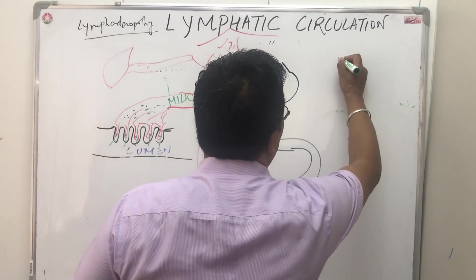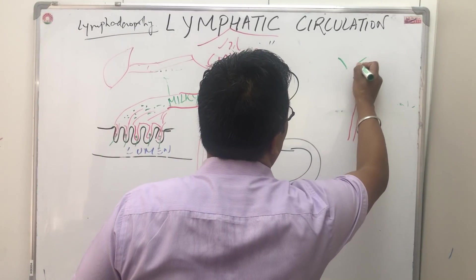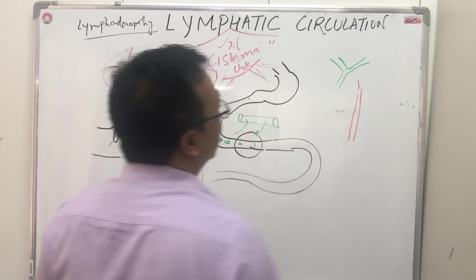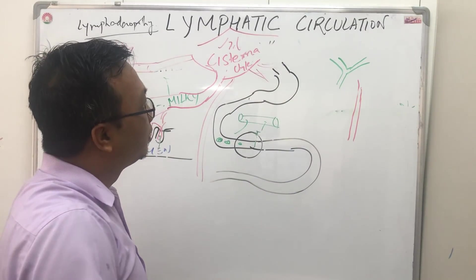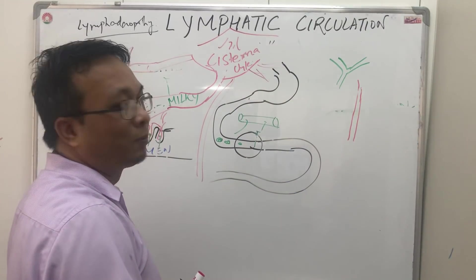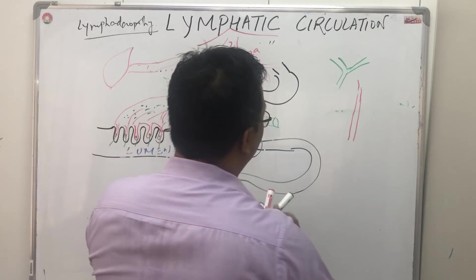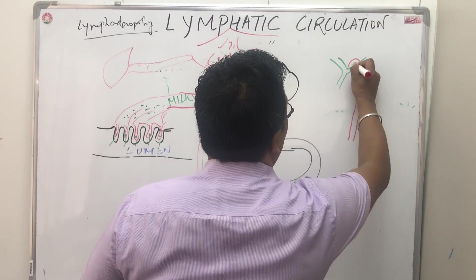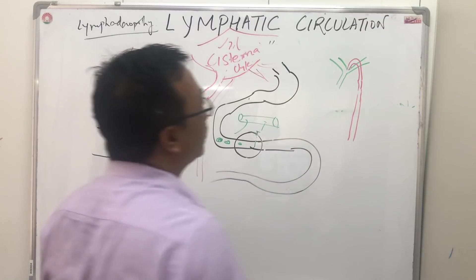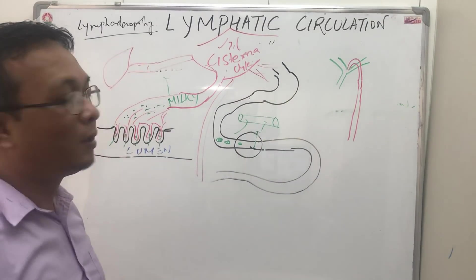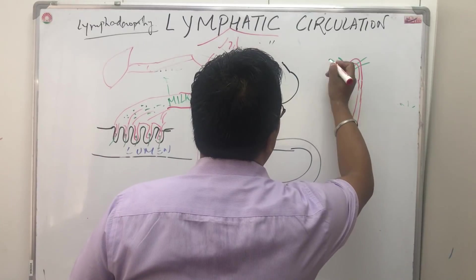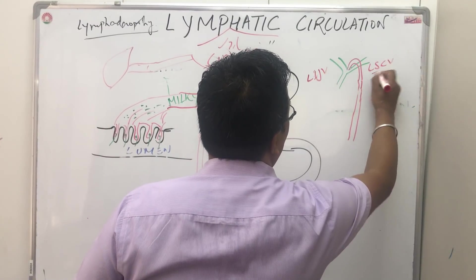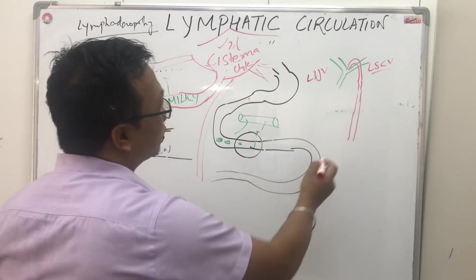The thoracic duct opens into the junction of the left subclavian vein and the left internal jugular vein.